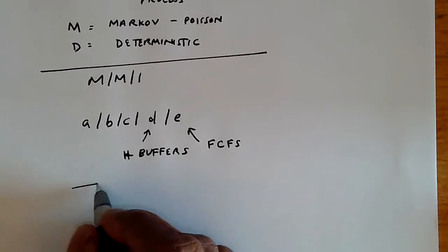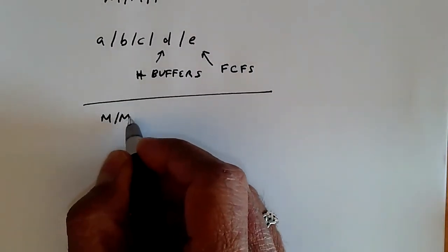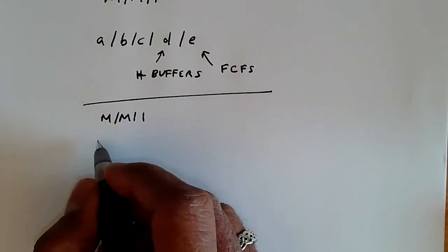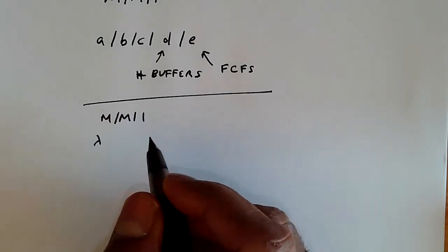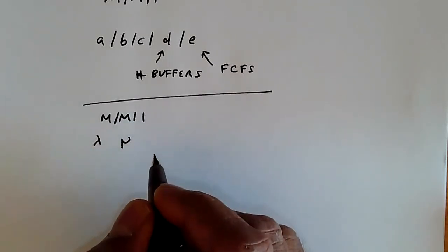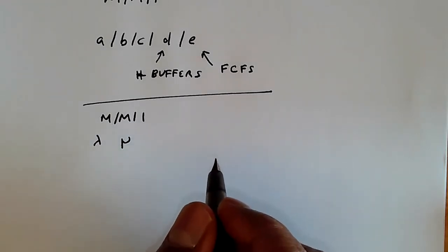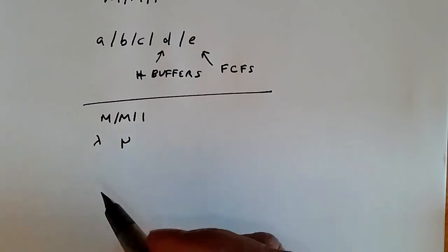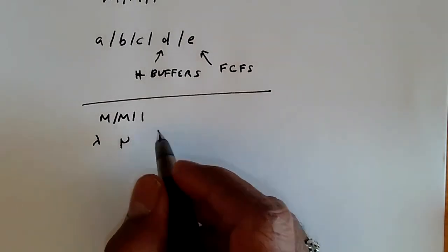So in the MM1 system, we have a state independent arrival rate lambda. It doesn't matter how many customers are in the queue, the arrival rate is always lambda. The state independent departure rate is mu, which can be thought of as the rate at which the server serves the customers. And we have a single server. That's the MM1 queue.